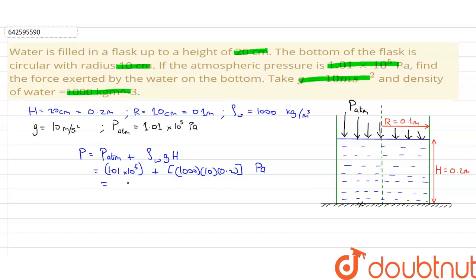This will be equal to 1.01 into 10 to the power 5 plus 2000 Pascals. So this will give us 1.03 into 10 to the power 5 Pascals.